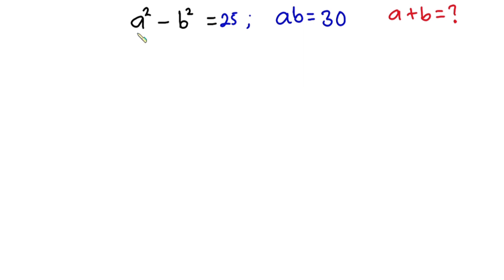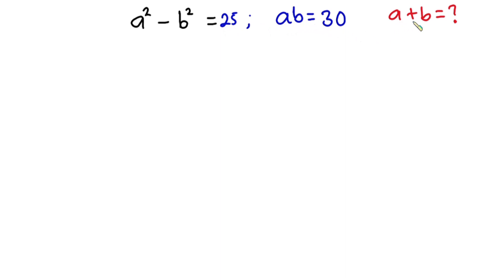Hello everyone. In this video we have this interesting problem: we have a squared minus b squared is equal to 25, and we also have a times b equal to 30, and we have to find the value of a plus b.